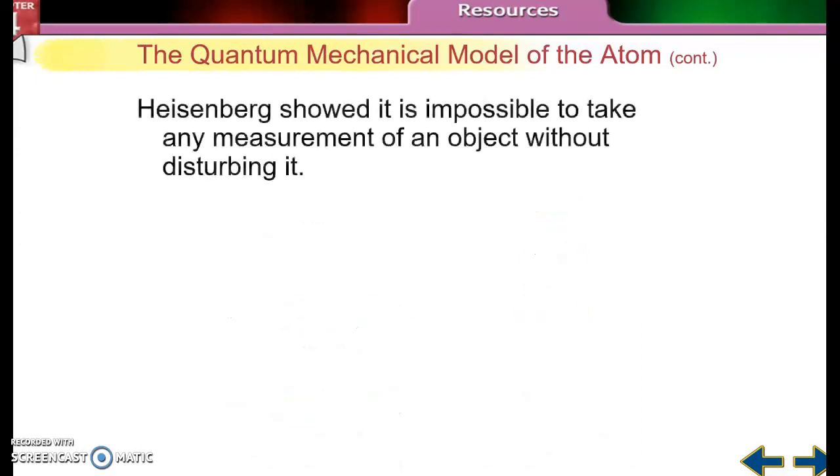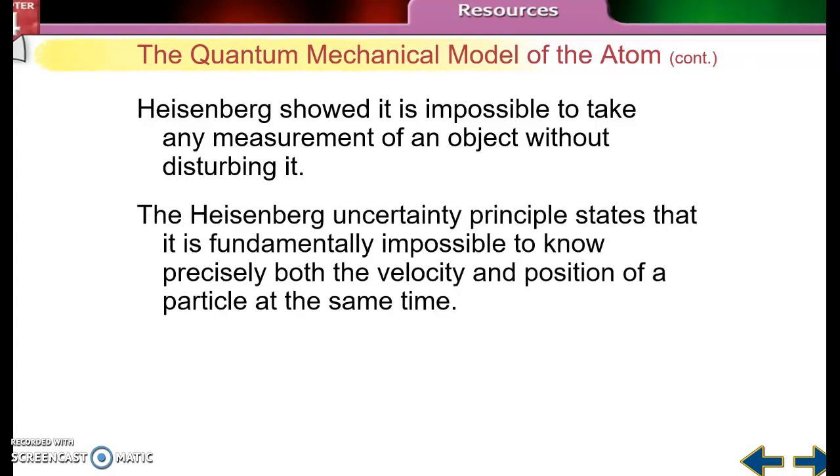There's a guy named Heisenberg. You might have heard of his name before. But what Heisenberg showed is that it's impossible to take any measurement of an object without disturbing it. So think about it right now. If you're at the doctor and the nurse asks you to get on the scale so they can get your weight, they're disturbing you. You're having to get up off of your chair. You're having to move so that they can measure your weight or measure your height.